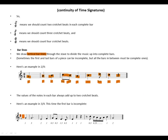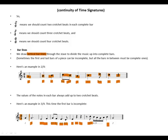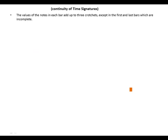Here's an example in 3/4 — three crotchets in one bar. We draw vertical bar lines to divide. The first bar here is incomplete. In each complete bar the notes add up to three crotchet beats. The values of the notes in each bar add up to three crotchets, except in the first and last bar which are incomplete.